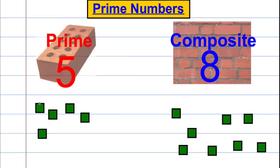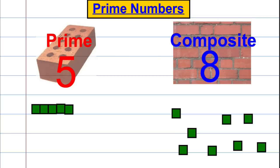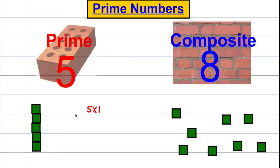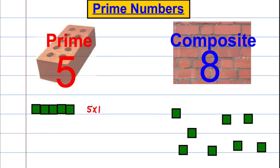A prime number: here we have five blocks. I can only arrange those five blocks into really one type of rectangle — a five by one rectangle. Some of you might say you could arrange it as one by five, but essentially one by five is the same thing as five by one. There is only one way to arrange a prime number, and it's five by one. There are no numbers other than one and five that multiply to five.